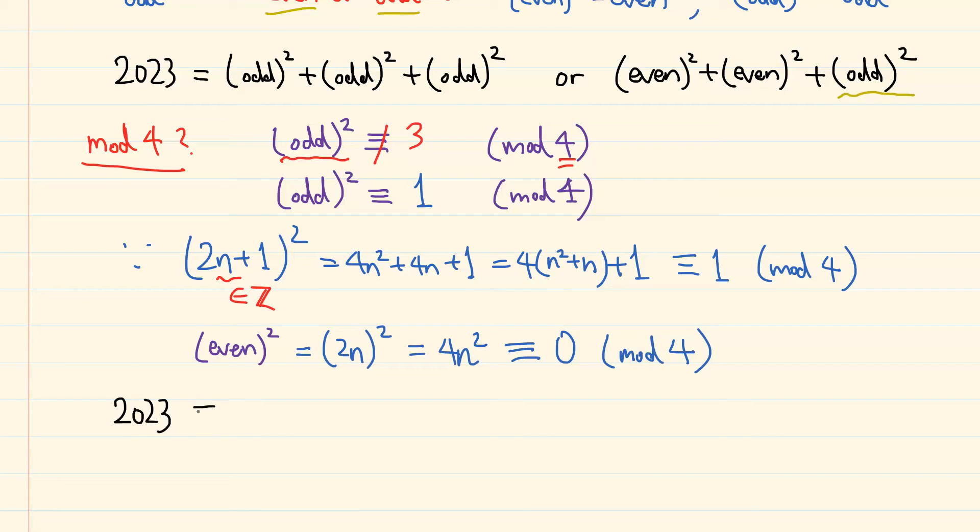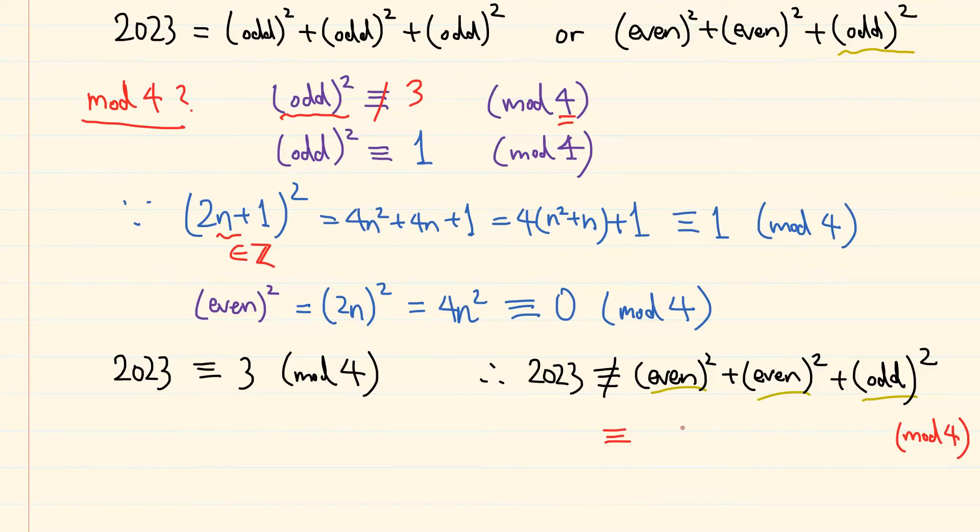Now, this 2023 is congruent with 3 modulo 4. Therefore, it cannot be the sum of 2 even numbers squared and 1 odd number squared, because that would be congruent with 0 plus 0 plus 1, which is 1 modulo 4. Therefore, if 2023 can be expressed as a sum of 3 squares, then it has to be the sum of squares of 3 odd numbers.